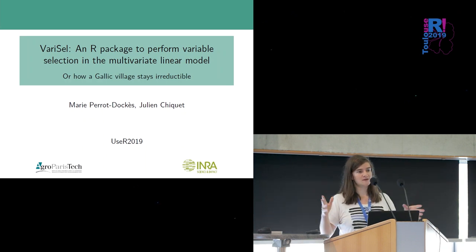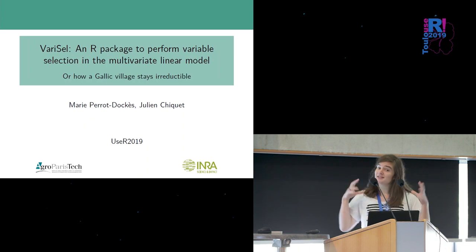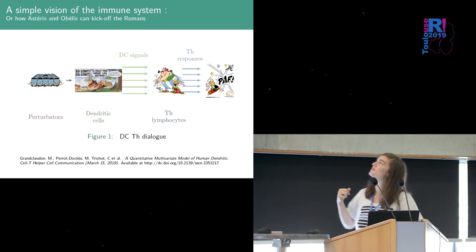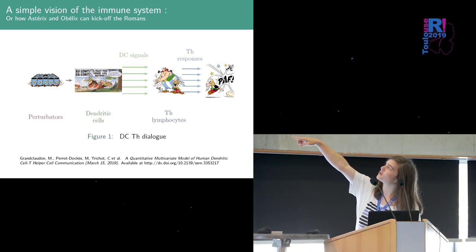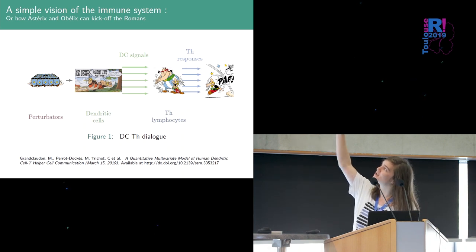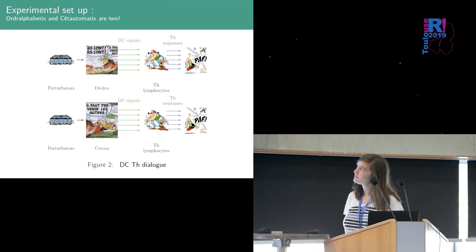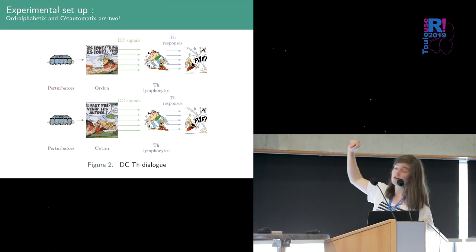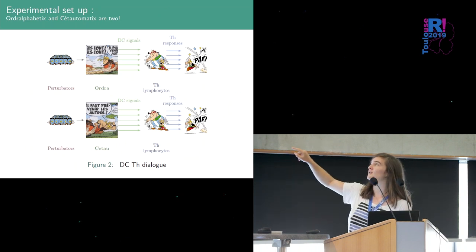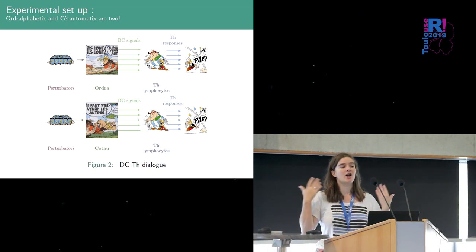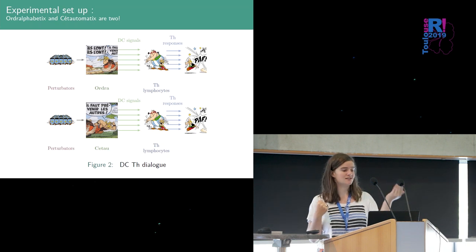So a naive vision of the immunology is that when perturbators arrive in our system it will be detected by a dendritic cell this dendritic cell will send some signals in order to warn the warrior that there is a problem so here you have the perturbation then the dendritic cell finds that there is a problem that sends signals that are captured by the warriors the Th lymphocytes that will send some other signal in response in order to fight the perturbation. But in practice in our experiment we have two kind of dendritic cell we have the other cells and the cDC2 cells and for both in each experiment we measure the DC signal and the Th response and the aim of the project is to link to associate the DC signal and the Th response.